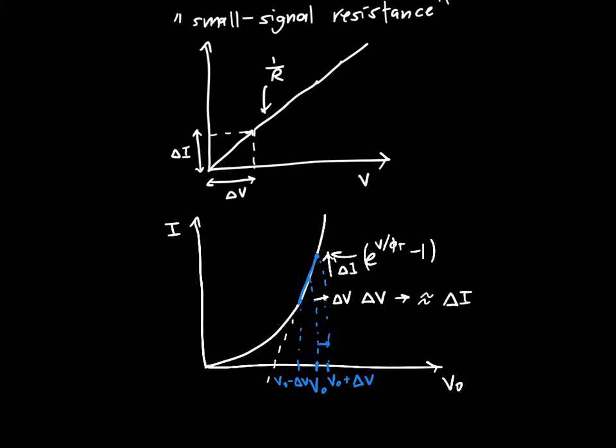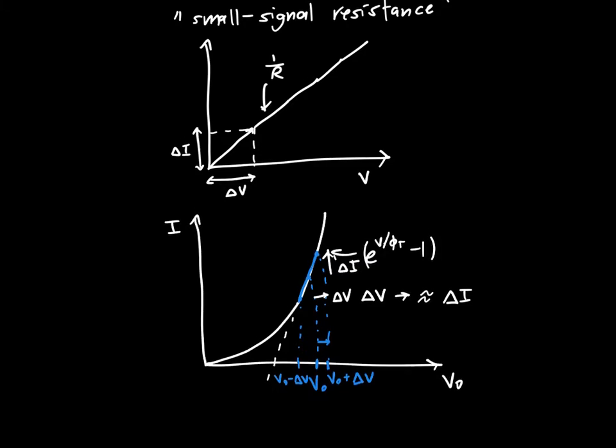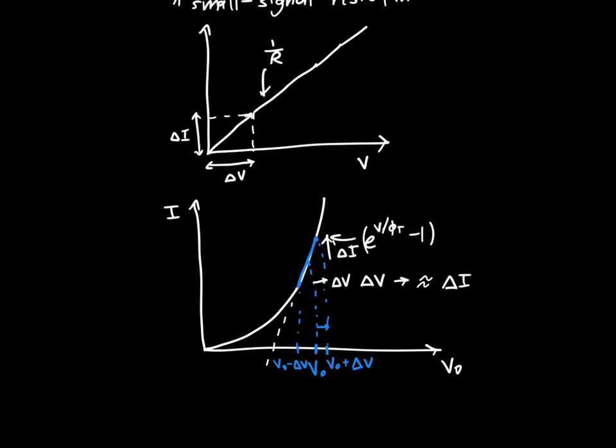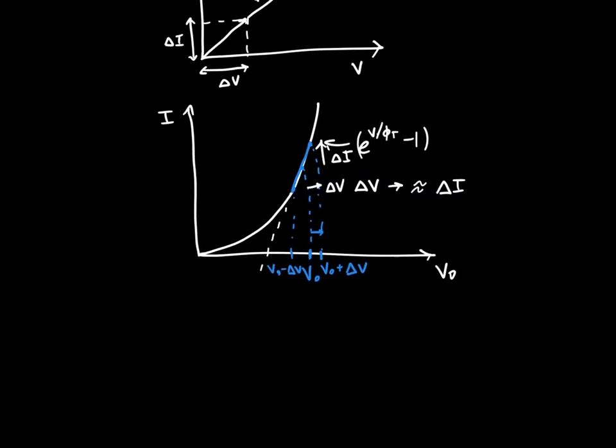If we make this increase delta V we'll get some increase in the current delta I. This is what's called a differential resistance. This is what we're trying to get out of our diode. It's the next best thing to an actual resistance because it acts like a resistor so long as you don't go very far away from the diode's DC voltage.